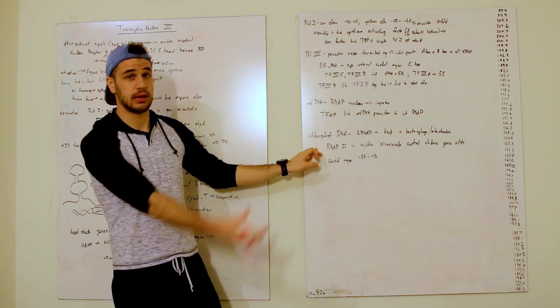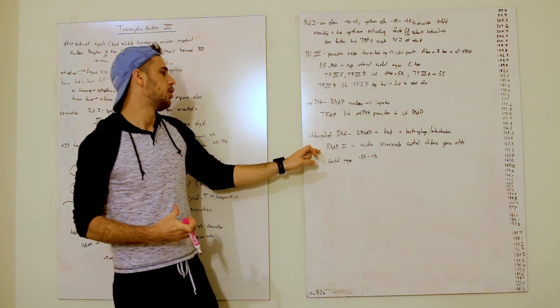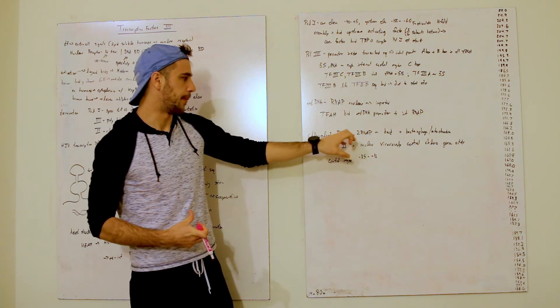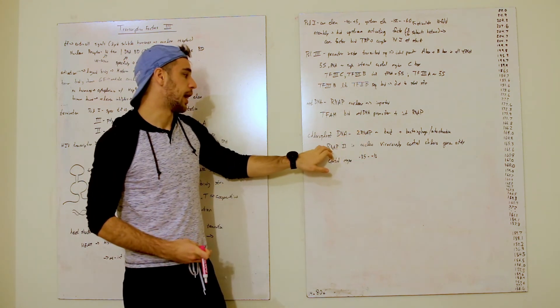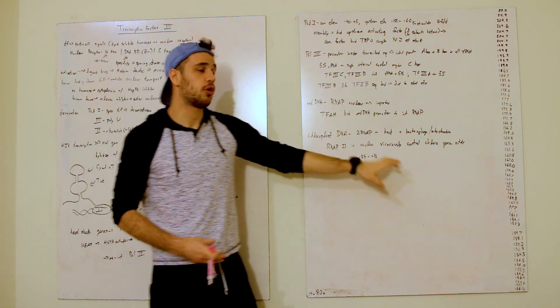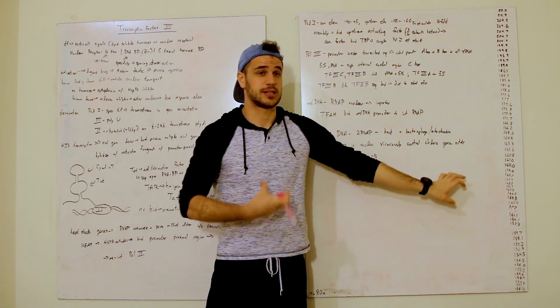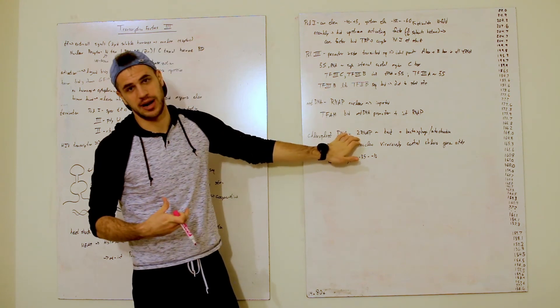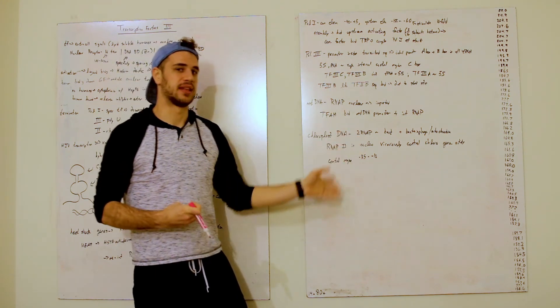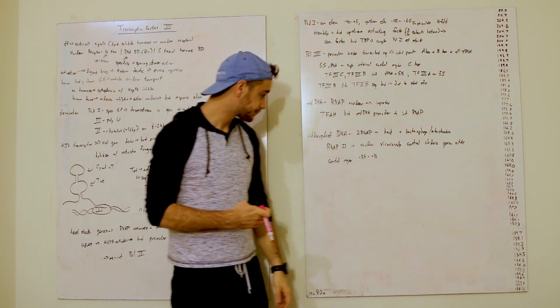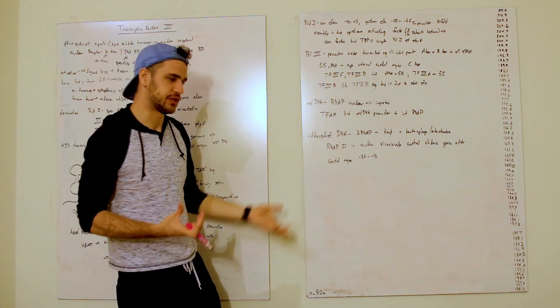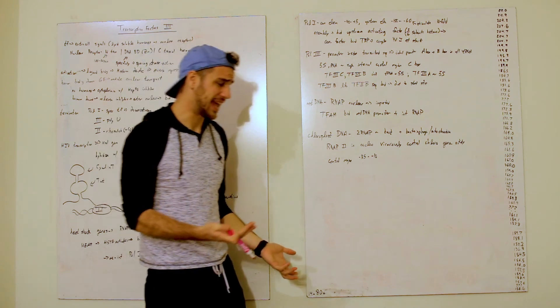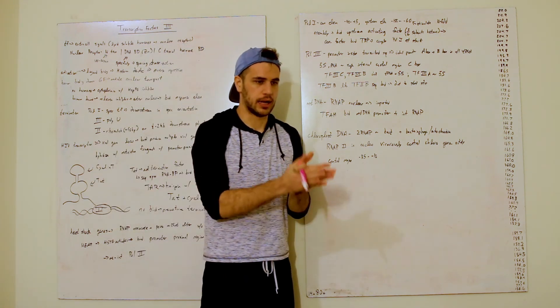And so, RNA polymerase II in the actual nucleus itself will actually indirectly, because it encodes the RNAPs here, it will actually vicariously control the chloroplast gene expression because it has to control this RNAP production and then import. And furthermore, you've got the control region in the chloroplast DNA, which is about minus 35 to minus 10 base pairs from the start site.